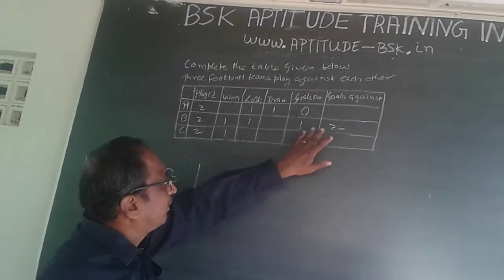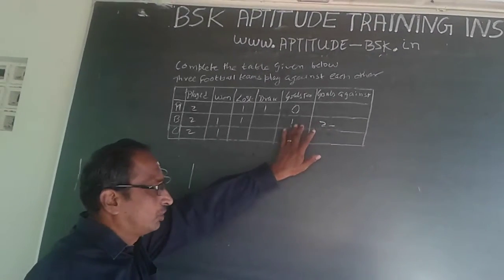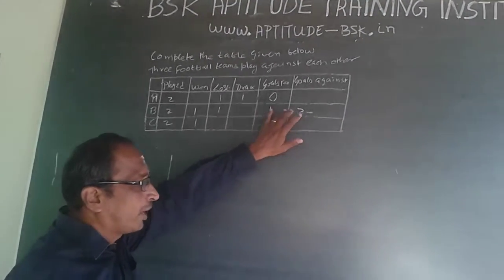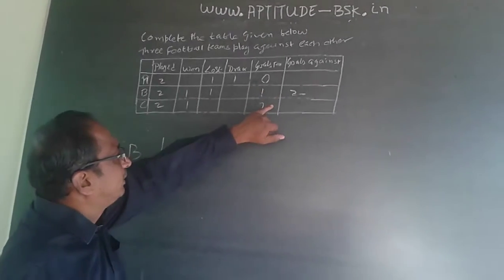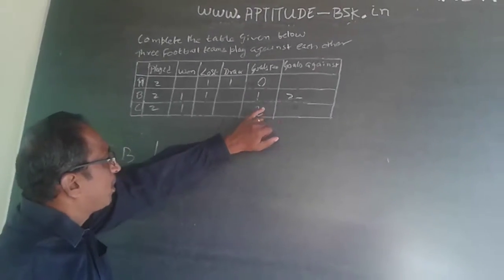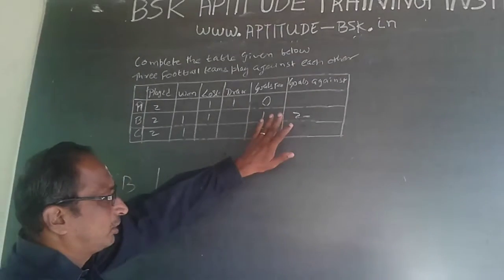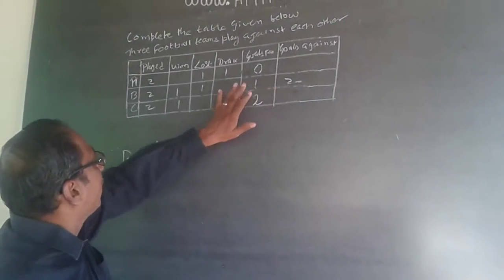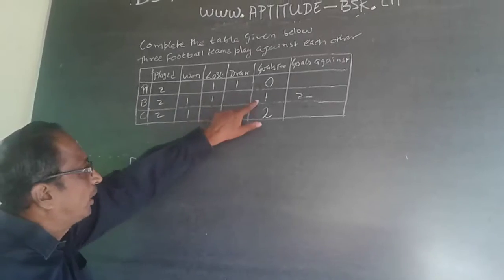Whether it's 2-1 or 2-0, the result remains the same. B lost and C won. But with this one goal, it has been given that B has won one game.